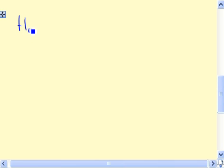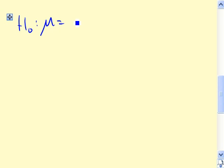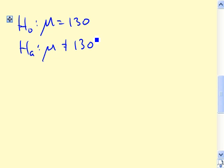First of all, our null hypothesis, H0, is that there is no change. That's still 130 bushels per acre. The alternative is actually two-sided in this case because we just want to know, is there a change? It doesn't say one way or the other. Our significance level, alpha, is 0.05. So this is what we'll compare the p-value to to make a decision about whether or not to reject the null hypothesis.